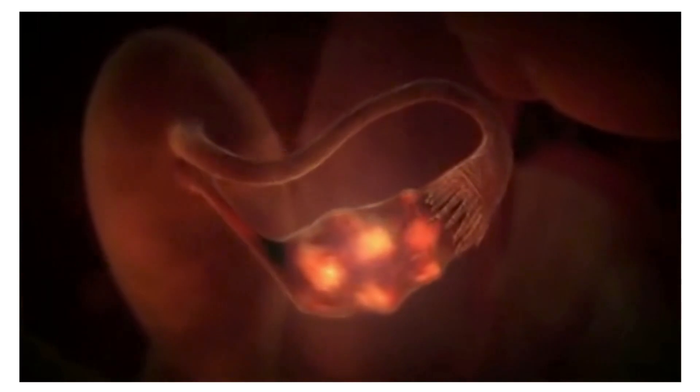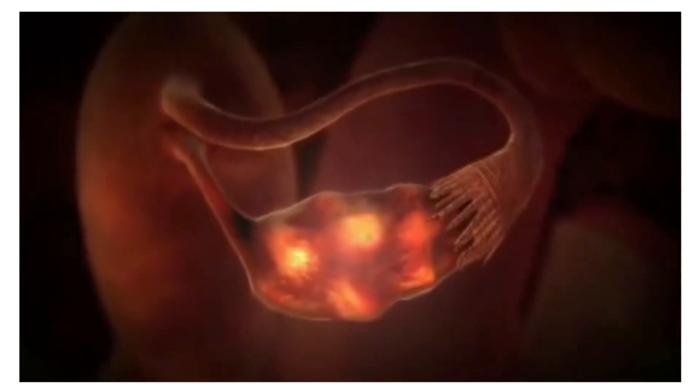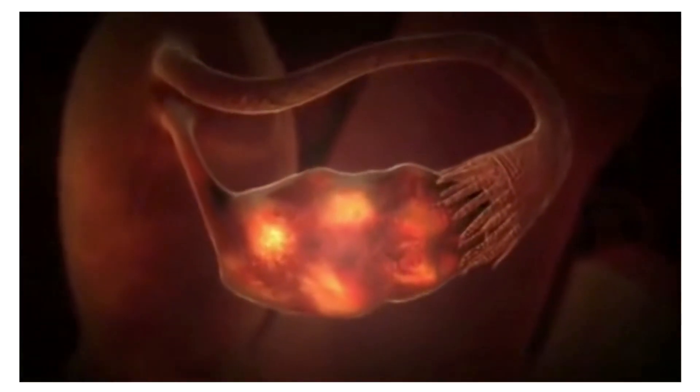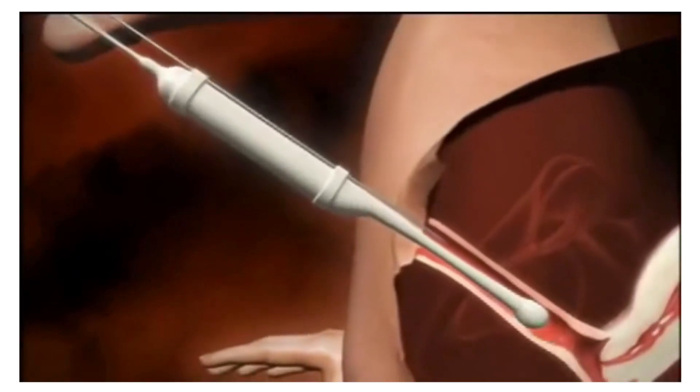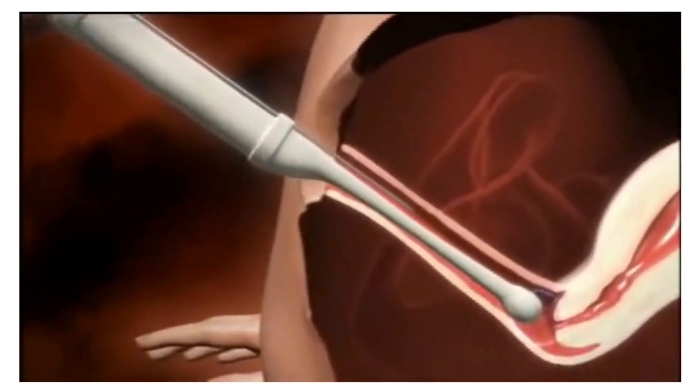Women having IVF are given special reproductive hormones to encourage several eggs to develop in the ovaries. Final maturation of the egg itself is induced by the administration of a further hormone.